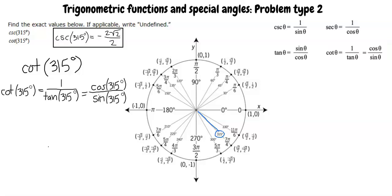So we can start by writing cotangent of 315 degrees equals cosine of 315 degrees divided by sine of 315 degrees. What is cosine of 315 degrees? Is it square root 2 over 2? That's correct.